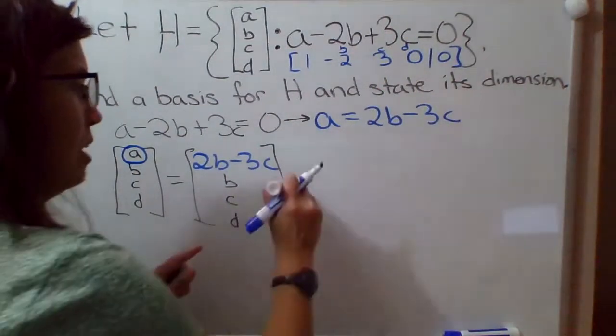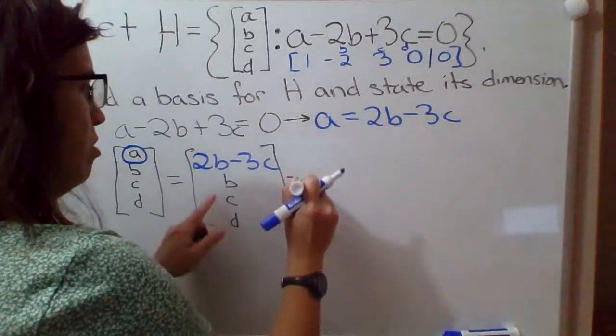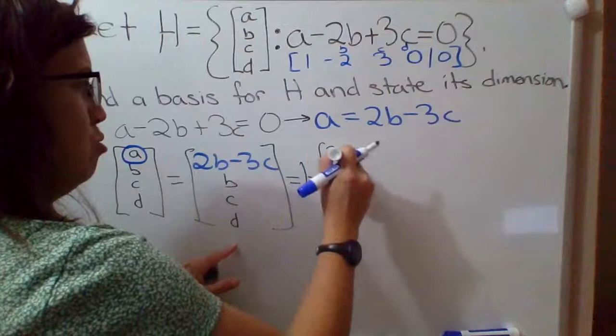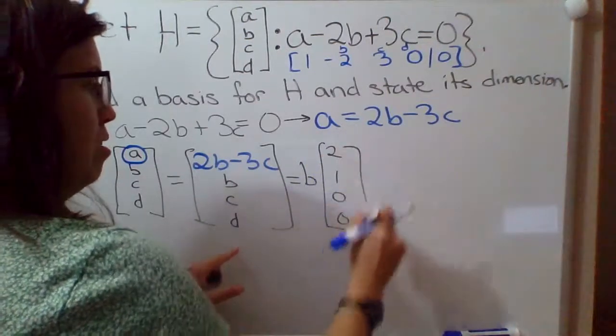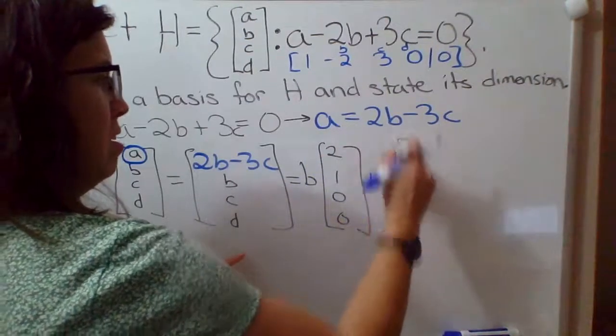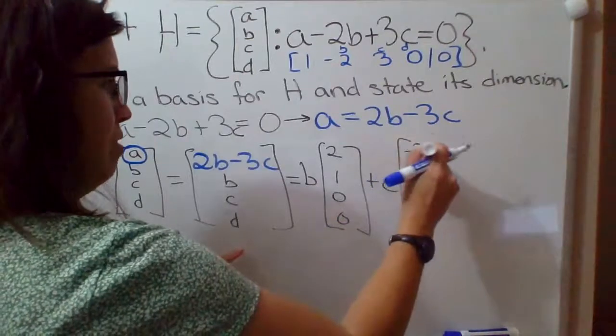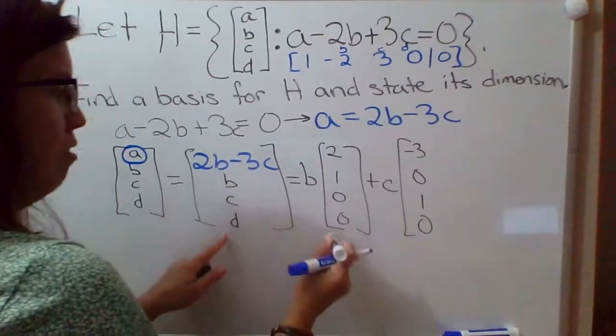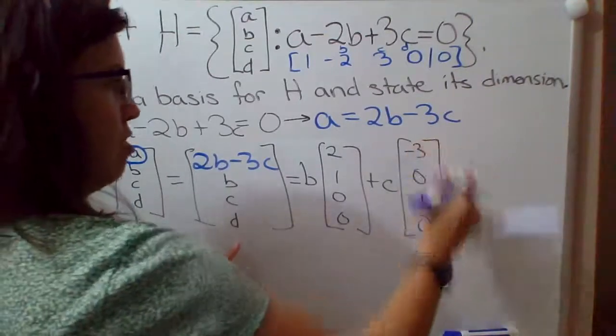So now, I can decompose that into B times the vector 2, 1, 0, 0, plus C times the vector negative 3, 0, 1, 0.